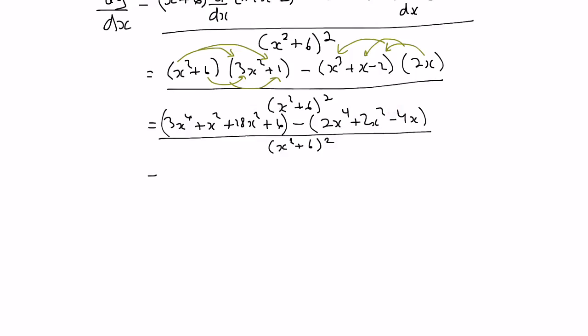So we would get 3x to the 4th plus x squared plus 18x squared plus 6 minus 2x to the 4th minus 2x squared plus 4x, all over x squared plus 6 squared.